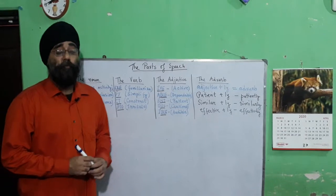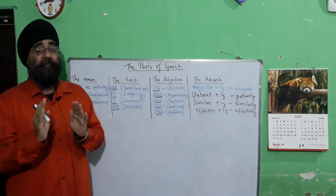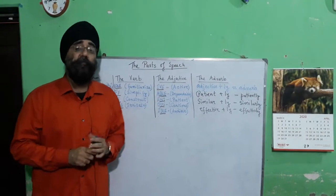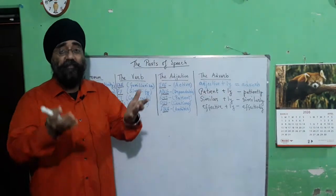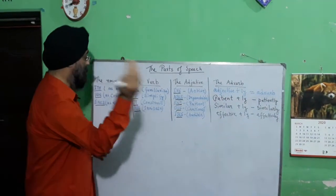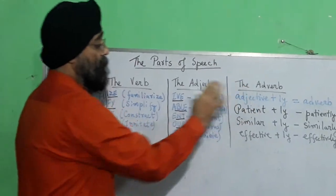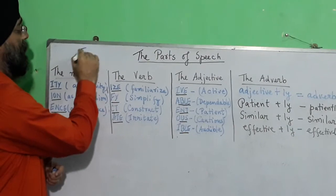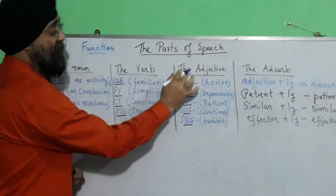All words are categorized into the parts of speech, which we have learned in grammar. But we don't need to learn all eight parts of speech — we can just pick up four, which will help us enhance our word vocabulary. These four are: noun, verb, adjective, and adverb. We are approaching this at a functional English level, focusing on word power rather than creating sentences.